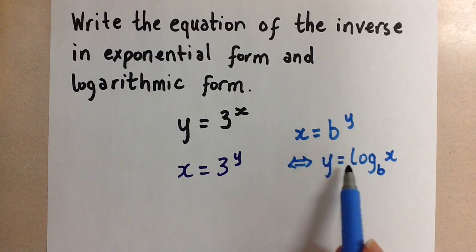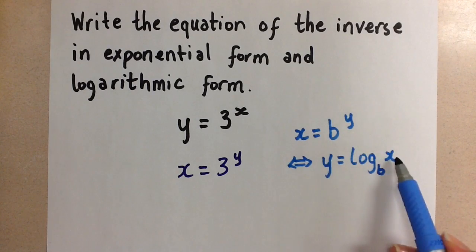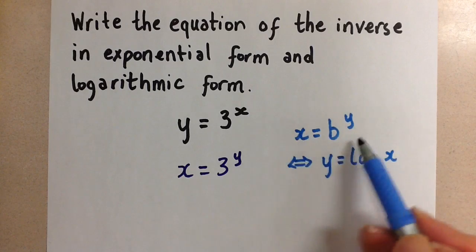Essentially, we can switch between these two. If we want to go in the opposite direction, we ask ourselves: b to the power of what gives us x? And that's how we get the exponential form.